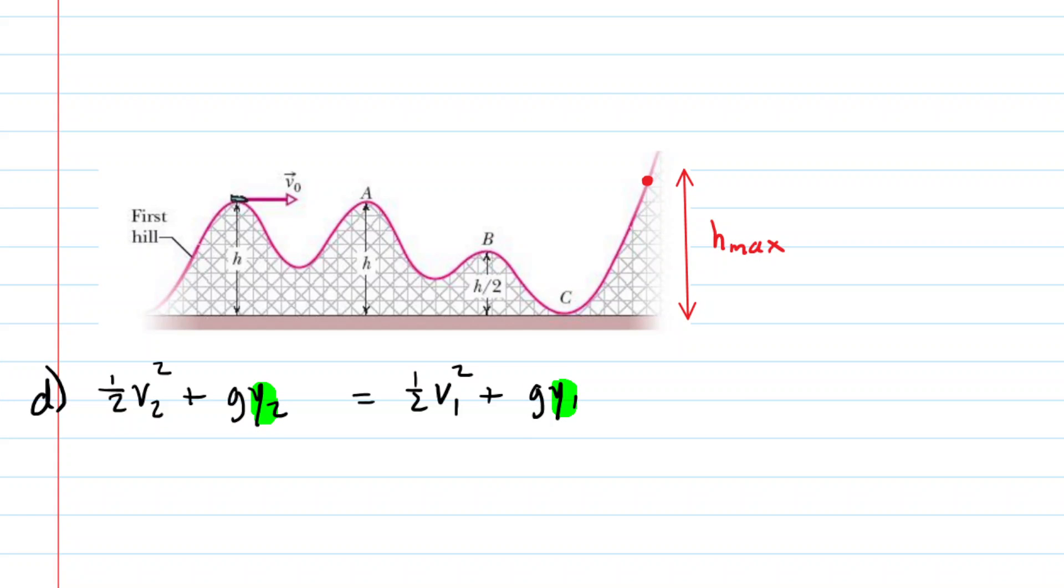Now in the last part of the question, part D, we have to calculate the maximum height that the roller coaster car will achieve. So that would be this position over here. We've labeled that height H max. It's very important to understand that at that final position, the roller coaster car will temporarily, momentarily, come to rest. So it's going to slide up that hill, it's going to pause for a moment, and then it's going to slide back down. Now when it pauses for that moment, that means that the final speed of the car at that point is going to be zero meters per second. So that's going to knock out this term right here. For the Y2, we're going to substitute in what we called H max. And then again for Y1, which is where the roller coaster started, we're going to just plug in the value of H.